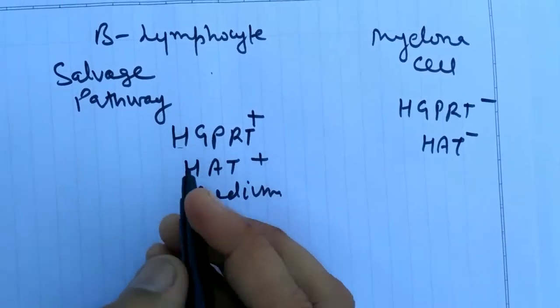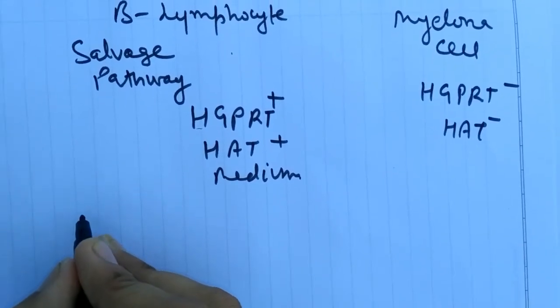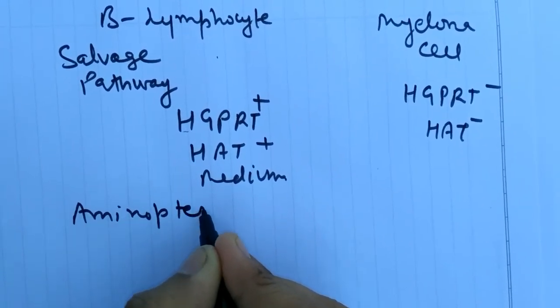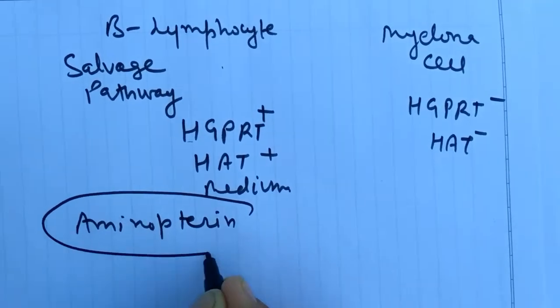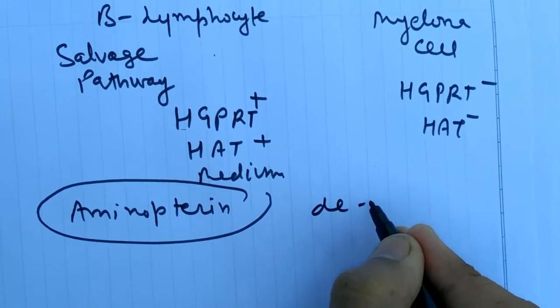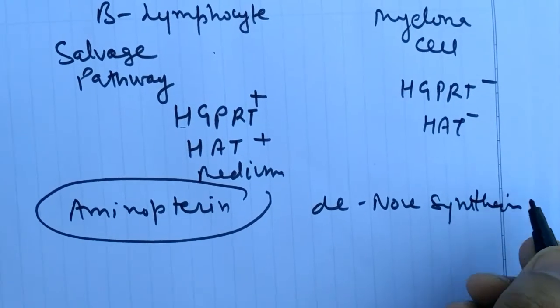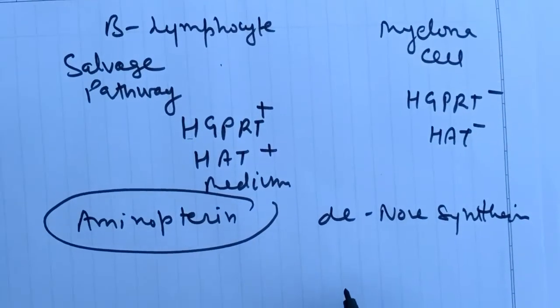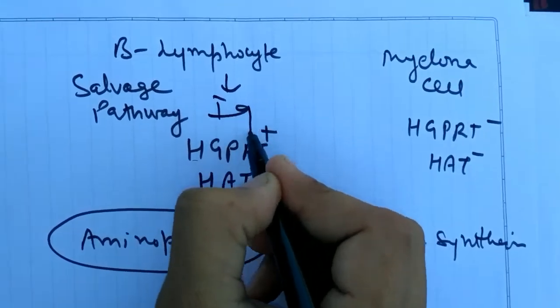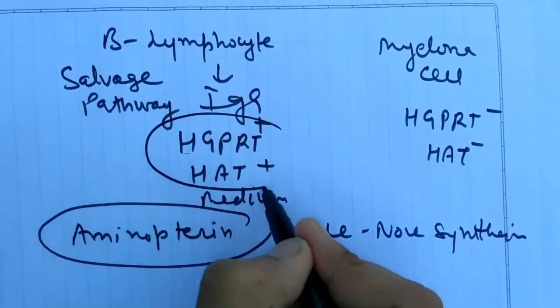In the metabolic processes, here is a poison that is produced, that is aminopterin. The aminopterin inhibits the growth in de novo synthesis. So the B lymphocytes have the property to produce different types of IgG and also they can grow in this medium.